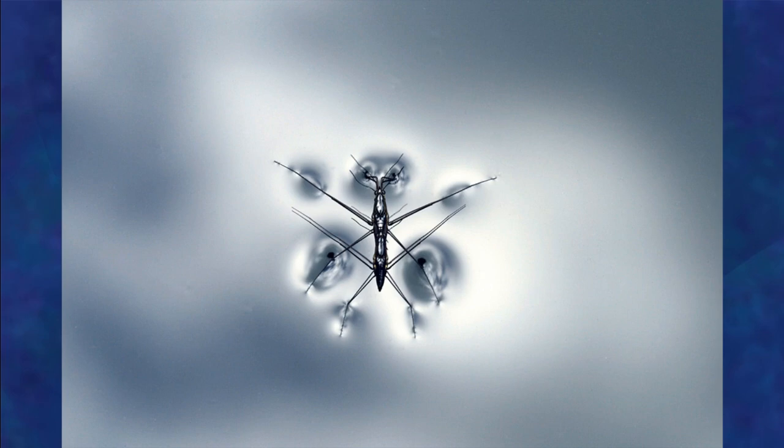Water striders skate around on the surface tension of the water. Water has this little skin on top of it, and water striders are very light and skate around on that. But it's not just that they're light, because other insects that are just as light will get trapped on that surface. So what is the physics behind the water strider's ability to walk on water?